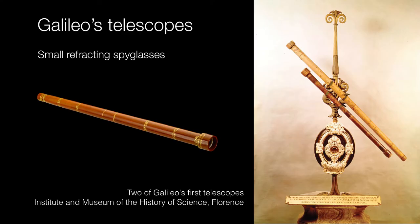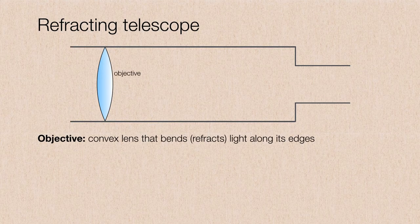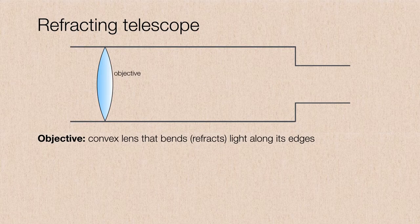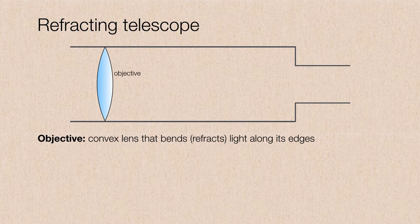So this type of telescope is called a refracting telescope. The first part of the refracting telescope is the lens, which has a special name. It's called the objective lens. Typically, this is a convex lens that's going to bend or refract the light along its edges while letting the light pass through the middle unimpeded.